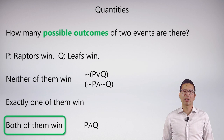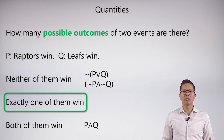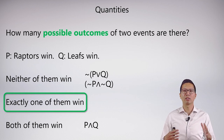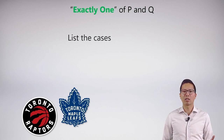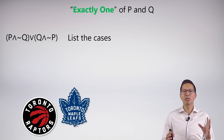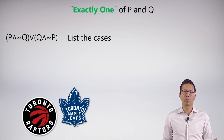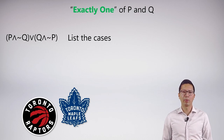So how do we actually symbolize 'exactly one of them will win'? When we do exactly-cases, the easiest way is to conceive of them as explicit cases and then list them. We want to list explicitly the cases where exactly one of them is true. So we say 'P and not Q,' or 'Q and not P.' These are the two possible cases where exactly one of them wins, connected by a disjunction.